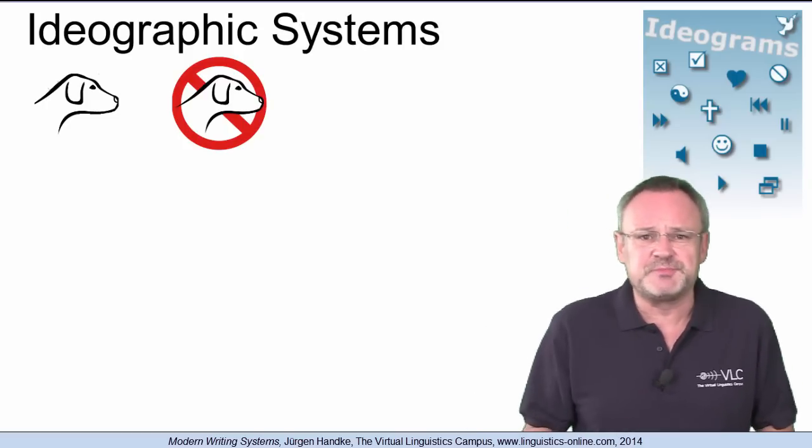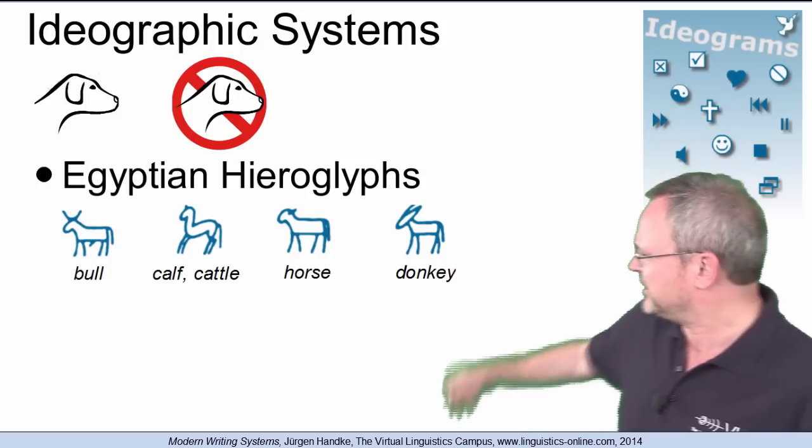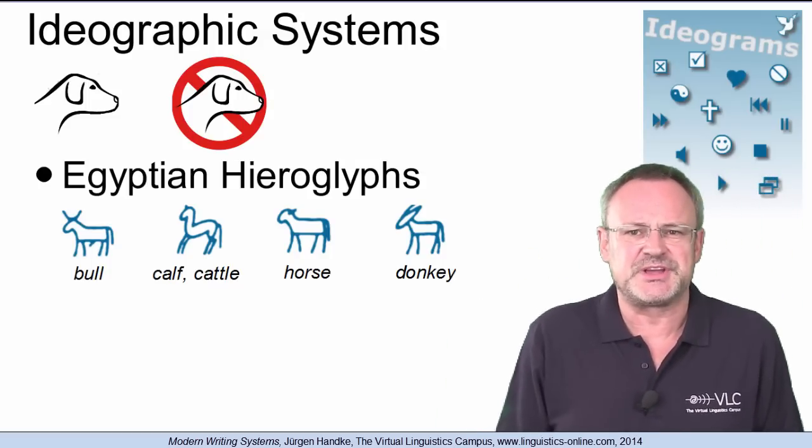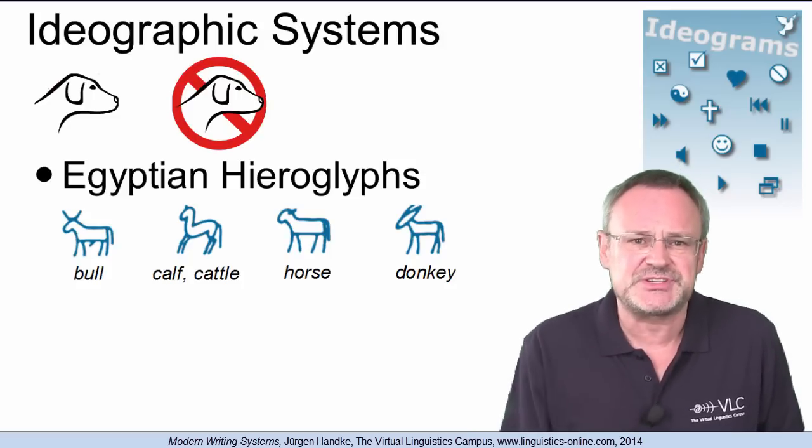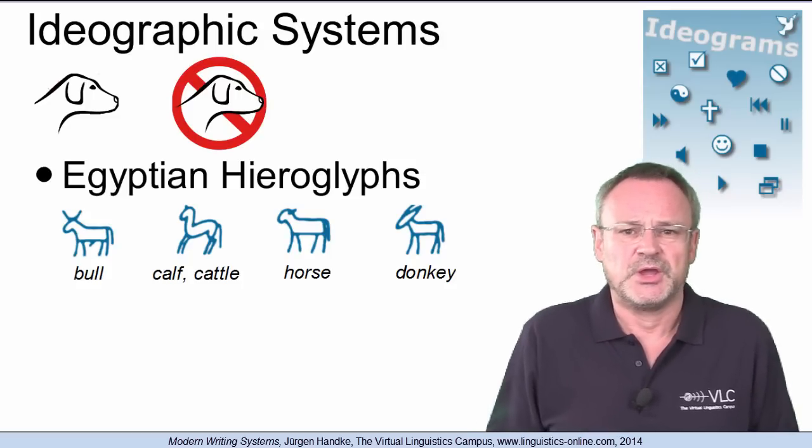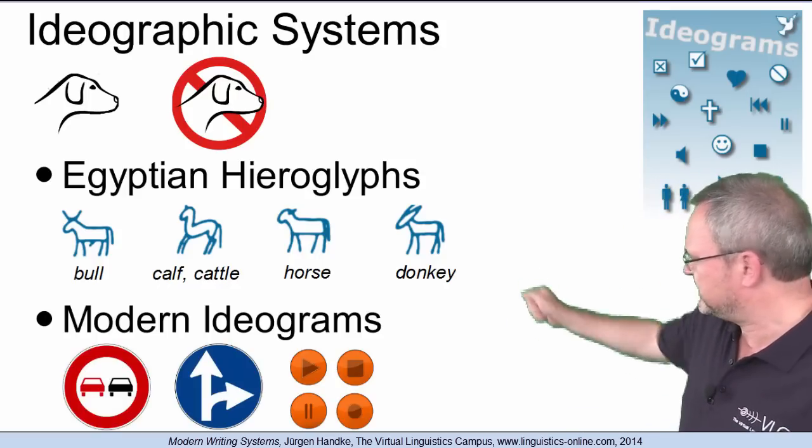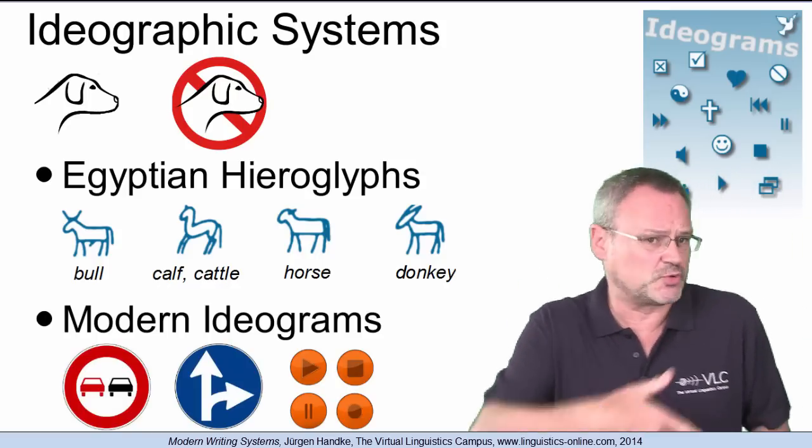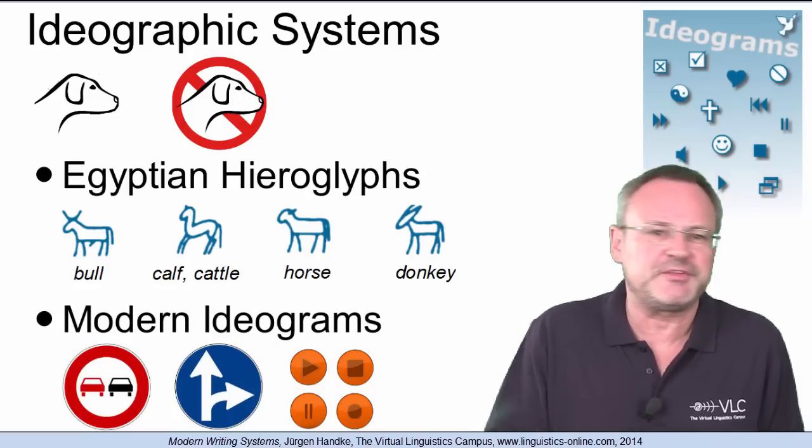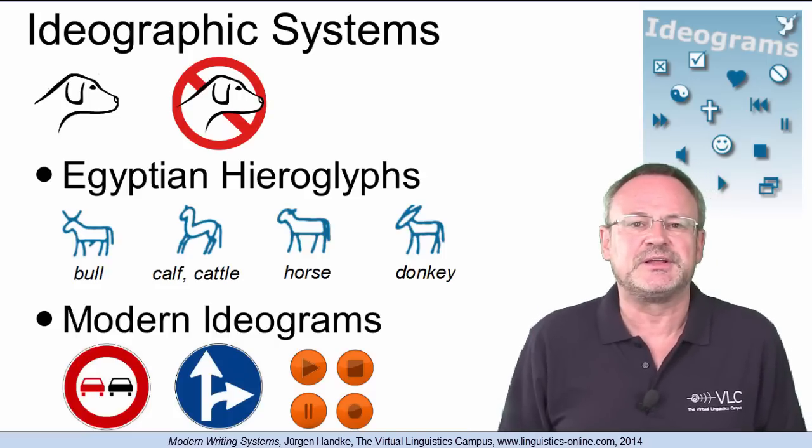Ideographs are often mixed up with pictographs. For example, in the Egyptian hieroglyphic system of around 3000 before Christ, typical for ideographs is their additional customary use. Examples of modern ideograms are traffic signs, those without additional writing, the symbols found on the control buttons of hi-fi systems and other technical equipment.